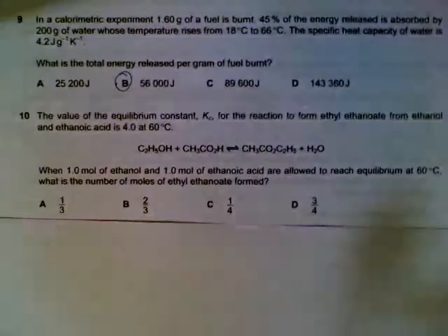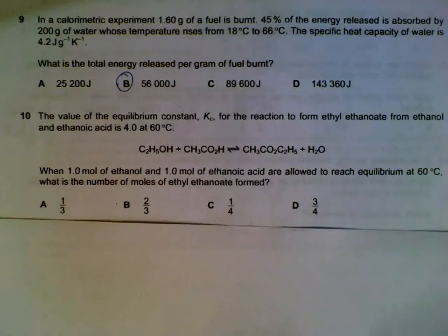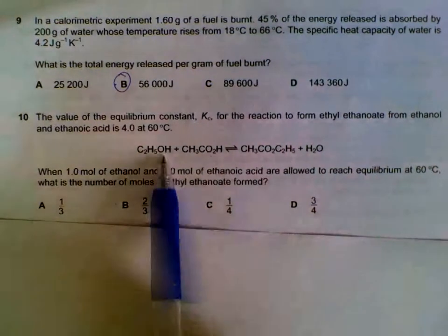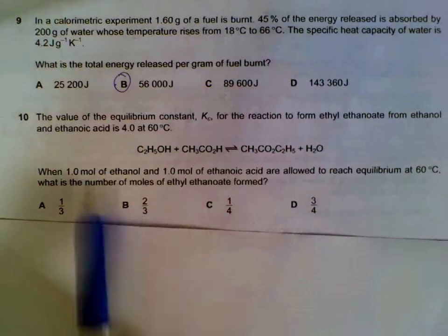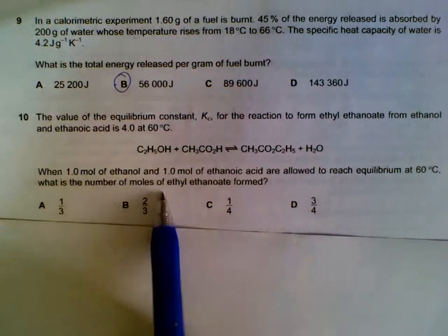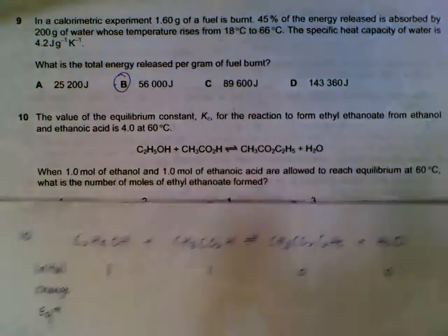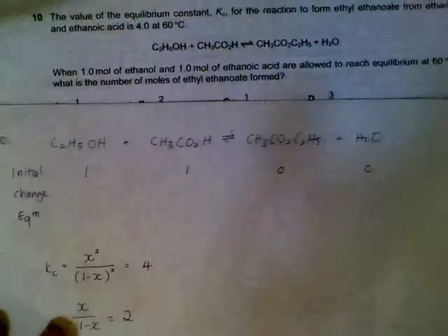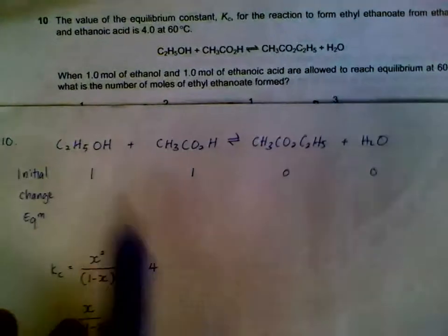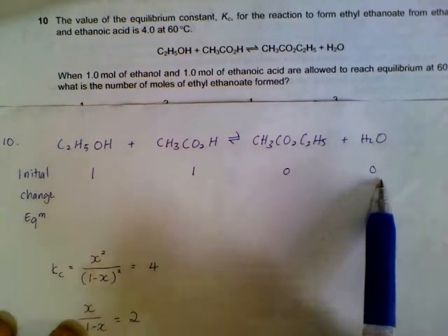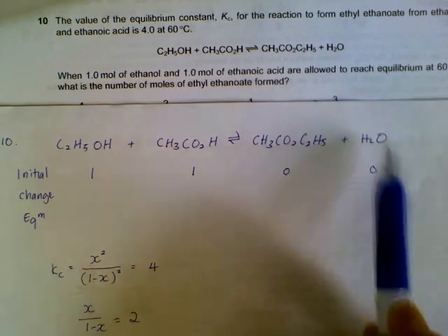Number 10. We have an equilibrium, esterification. We are supposed to find out the number of moles of esters formed. We form an equilibrium table. Initially, we have 1 mole of your reactants and no products formed yet. We do include water here.